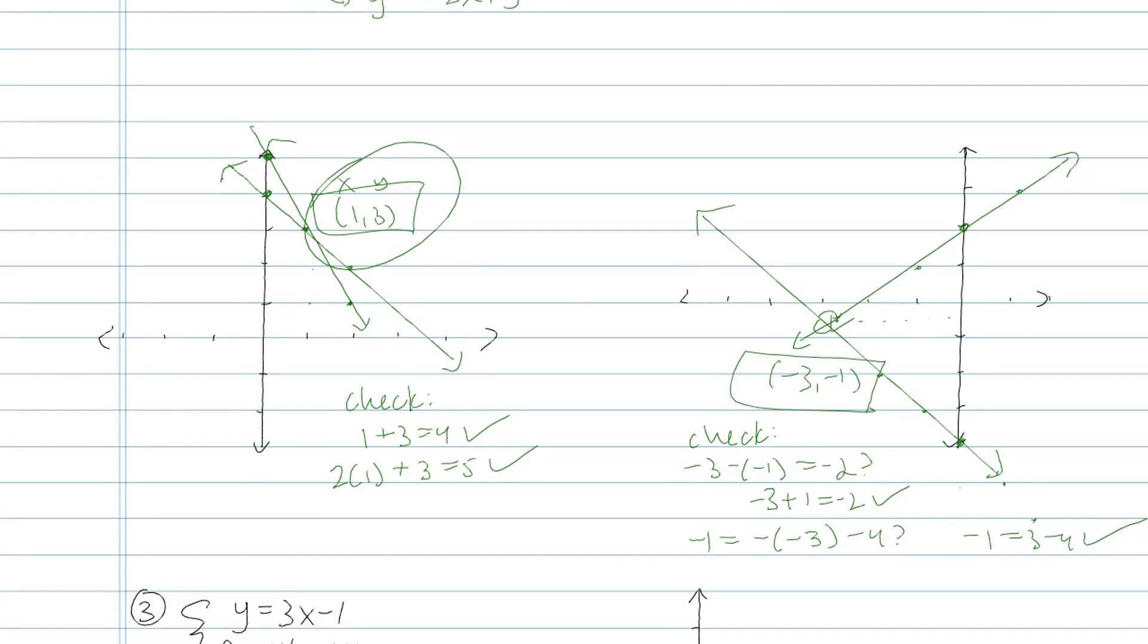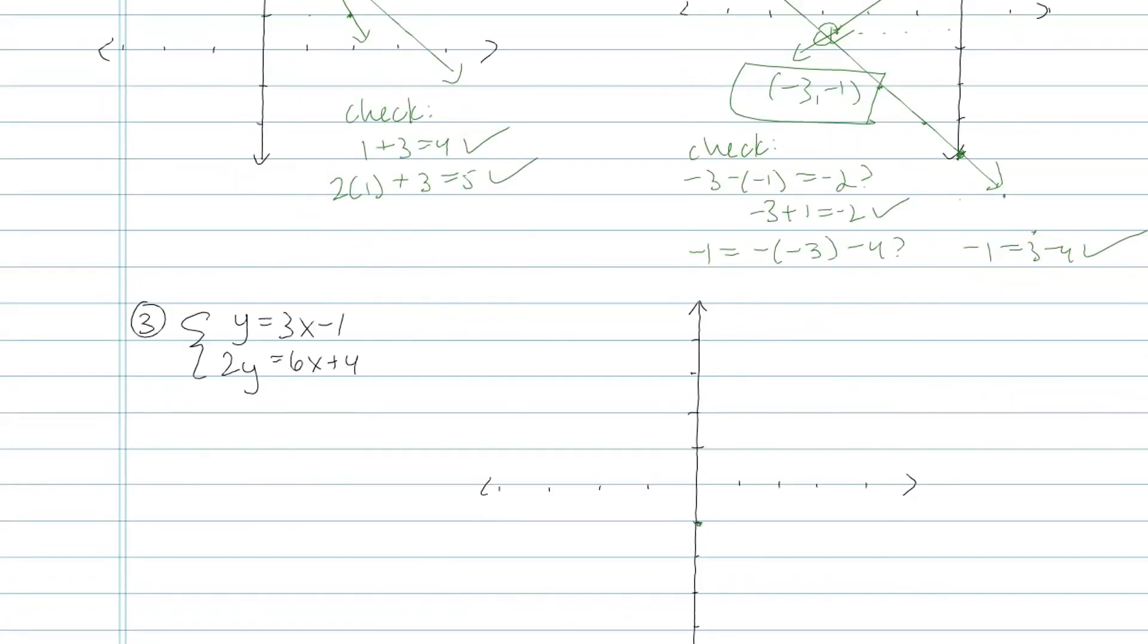Okay. Last one. The first equation is already in slope intercept form. I'll start at negative 1, go up 3 over 1. Use my ruler to draw that line. And then for the next one, it's not quite in slope intercept form yet. So I need to get y all by itself by dividing everything by 2. 3x plus 2.